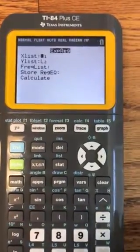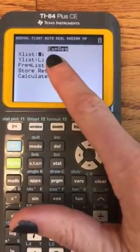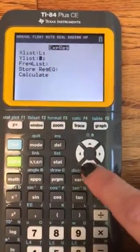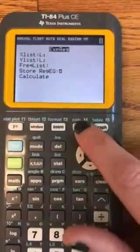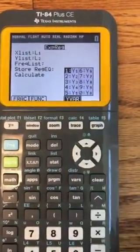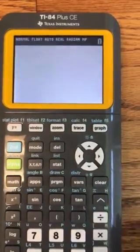So select that one, and then make sure you tell it where your data is. Mine is in list 1 and list 2. And I'm going to store it in my y1 spot. You can store it wherever you want and hit calculate.